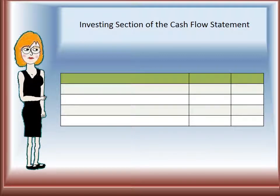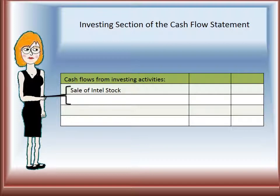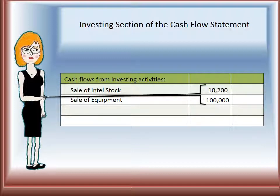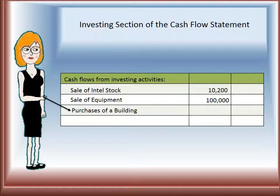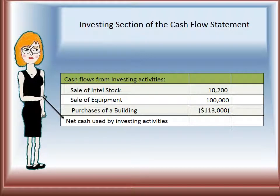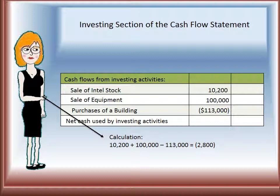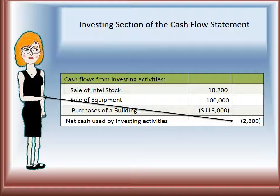In our example for the investing section, we have cash flows from investing activities. We will add sales of Intel stock and sales of equipment, as these two brought money into the company. Then we will have purchase of the building, which is a negative amount since we are paying for it. We take the positives minus the negatives to get net cash used by investing activities: $10,200 plus $100,000 minus $113,000 equals negative $2,800, which we place in the right-hand column.